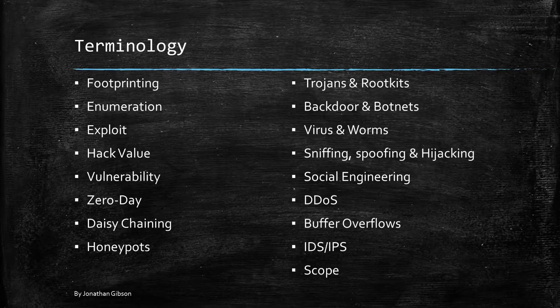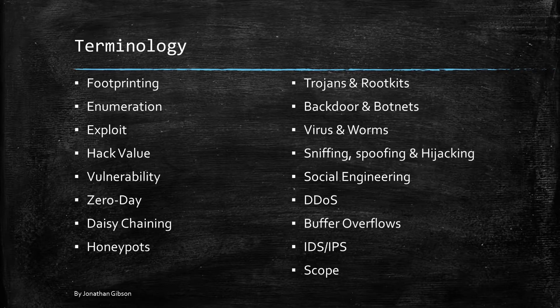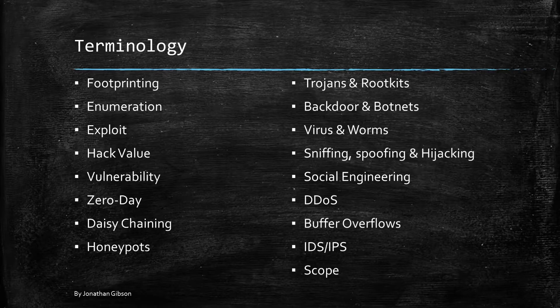Sniffing, spoofing, and hijacking: packet sniffing is an act of capturing packets of data flowing across a computer network — it's like wiretapping, but for the internet. Spoofing is a technique where the hacker gains unauthorized access to a computer or network by pretending to be a trusted user or host; oftentimes we see this in wireless attacks like the evil twin. Hijacking is a type of network security attack in which the attacker takes control of communications between two entities and masquerades as one of them.